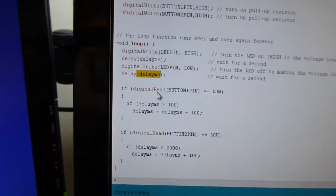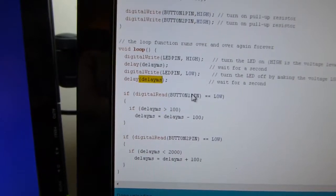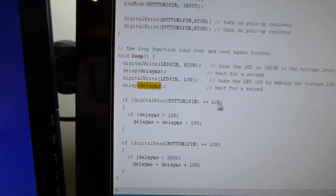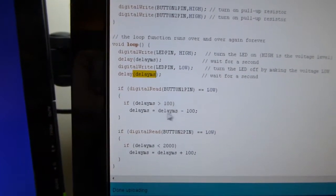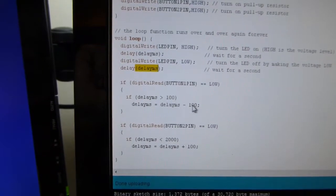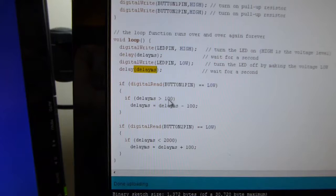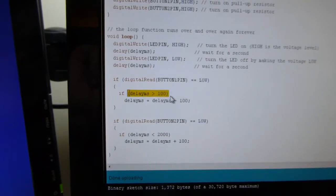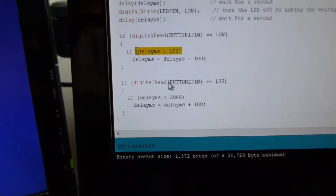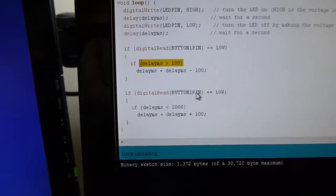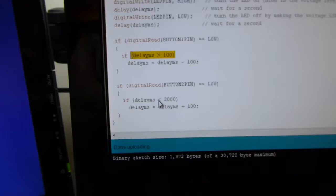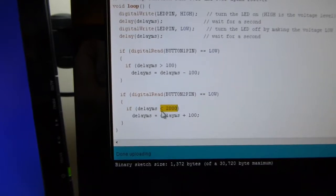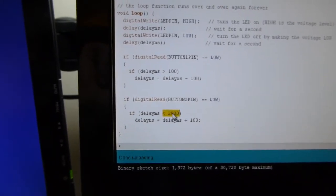So whatever that's currently set to it'll wait that many milliseconds between each cycle. And then it gets down to here where we'll read the value of button one and if it's low and remember low means that the button is pressed then it'll come down here and it'll subtract a hundred from the number of milliseconds it's waiting as long as the delay is greater than a hundred. So it won't go down to zero or negative values. That's what this line stops it from doing. And then we do the same thing. Button two is how we increase the delay make the thing run slower and that has an upper limit of two thousand. It won't let the button delay or the flash delay get over two seconds two thousand milliseconds.